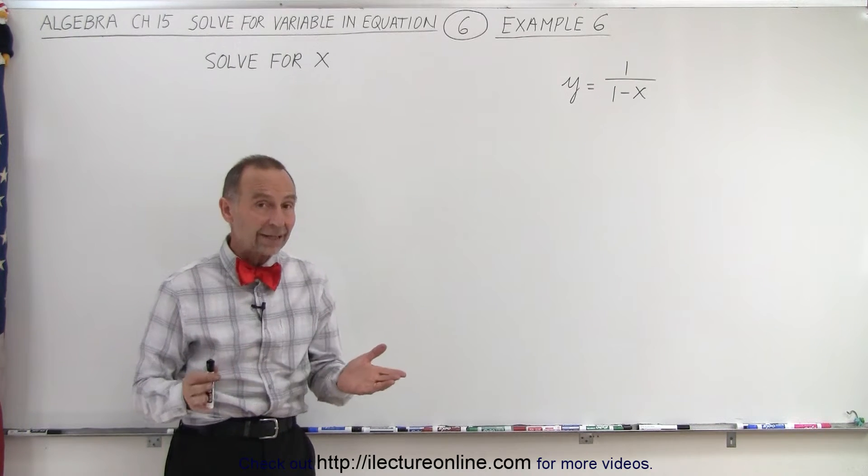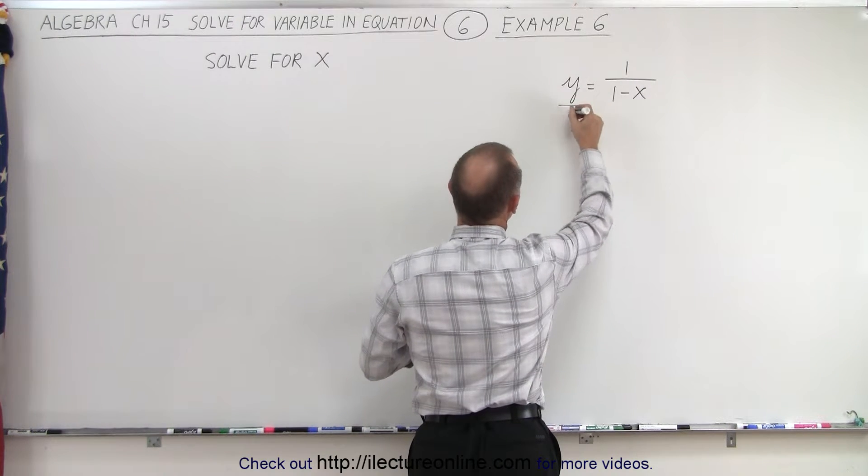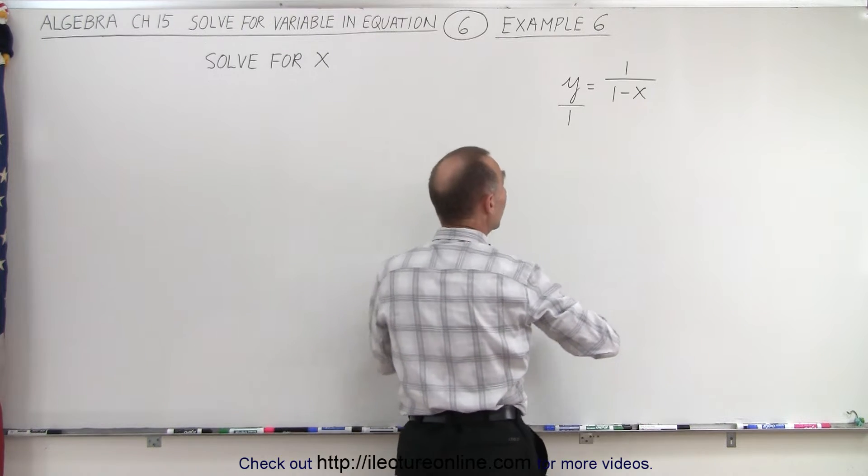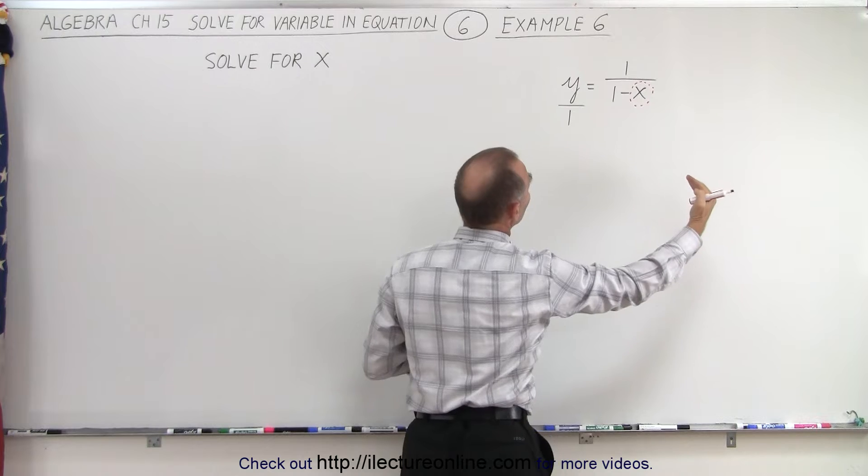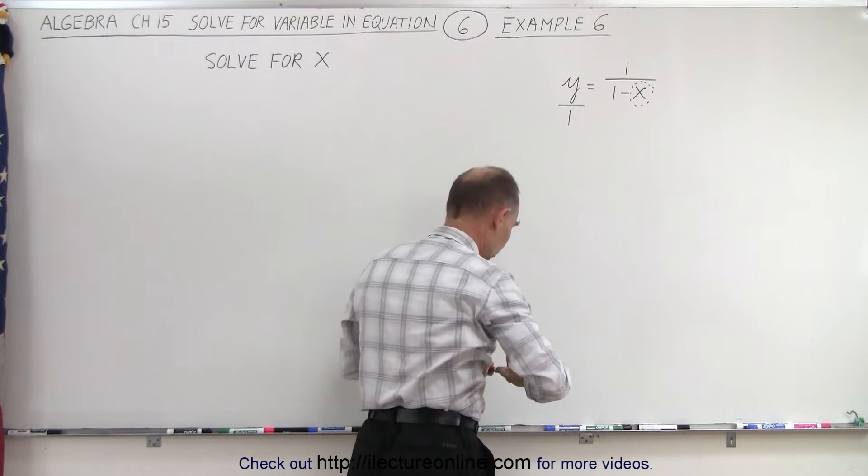In this case, we're trying to solve for x, and so what we're going to do here is realize that this can be written as y over 1, and we are looking to solve for x. So again, we're going to draw a little circle around it, and now we're going to move the 1 minus x over one direction, and the y in the other direction.